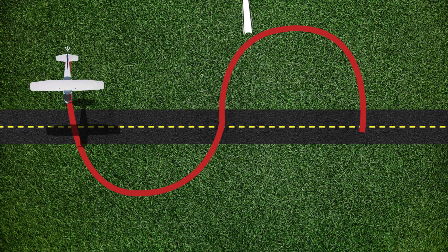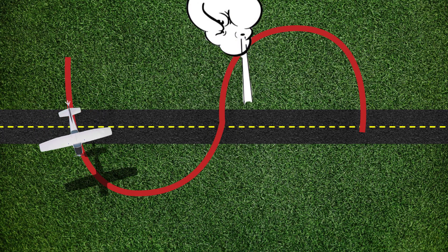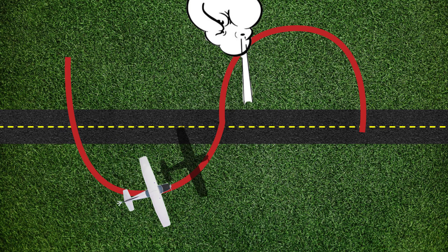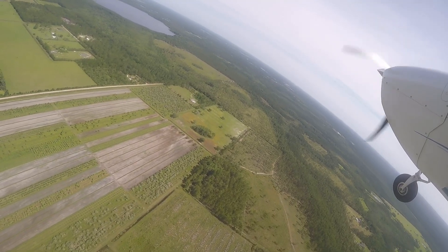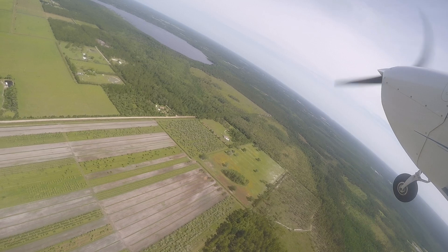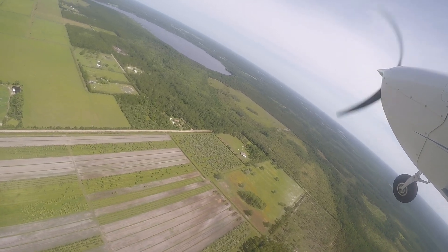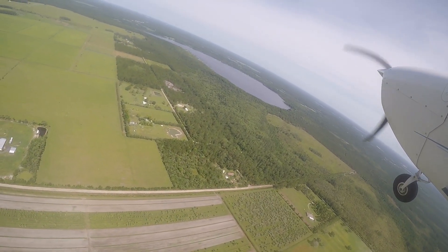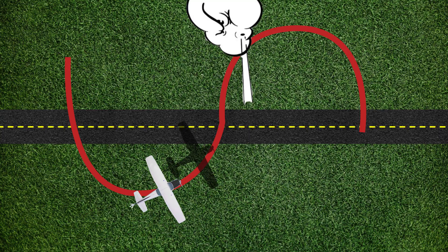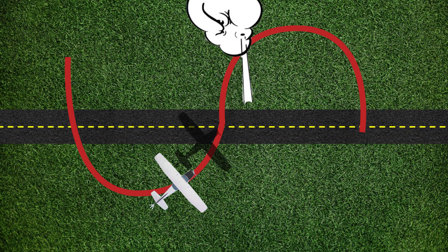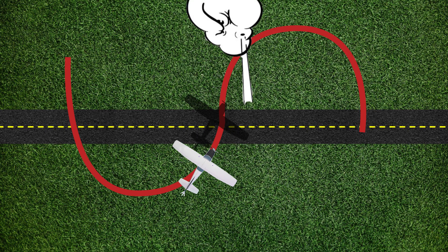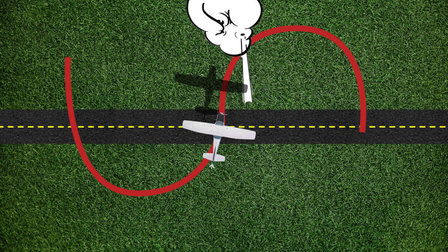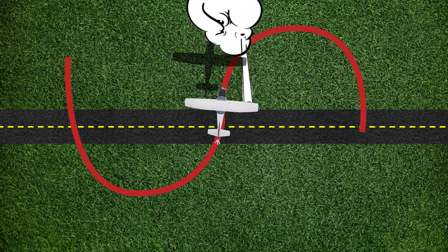The pilot crabs the aircraft's nose to the inside of the turn to properly compensate for the wind. After around 45 degrees of heading change, begin smoothly decreasing the bank while scanning the distance from the reference line. Continue decreasing the bank angle as necessary to arrive over the reference line perpendicular to the road with wings just rolling to wings level position.